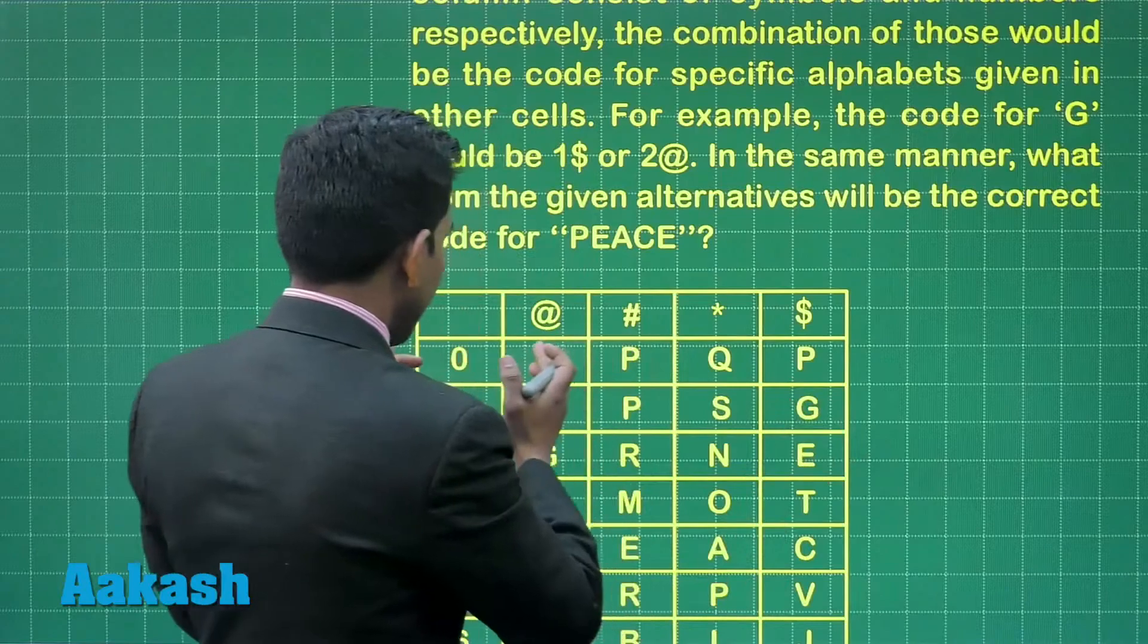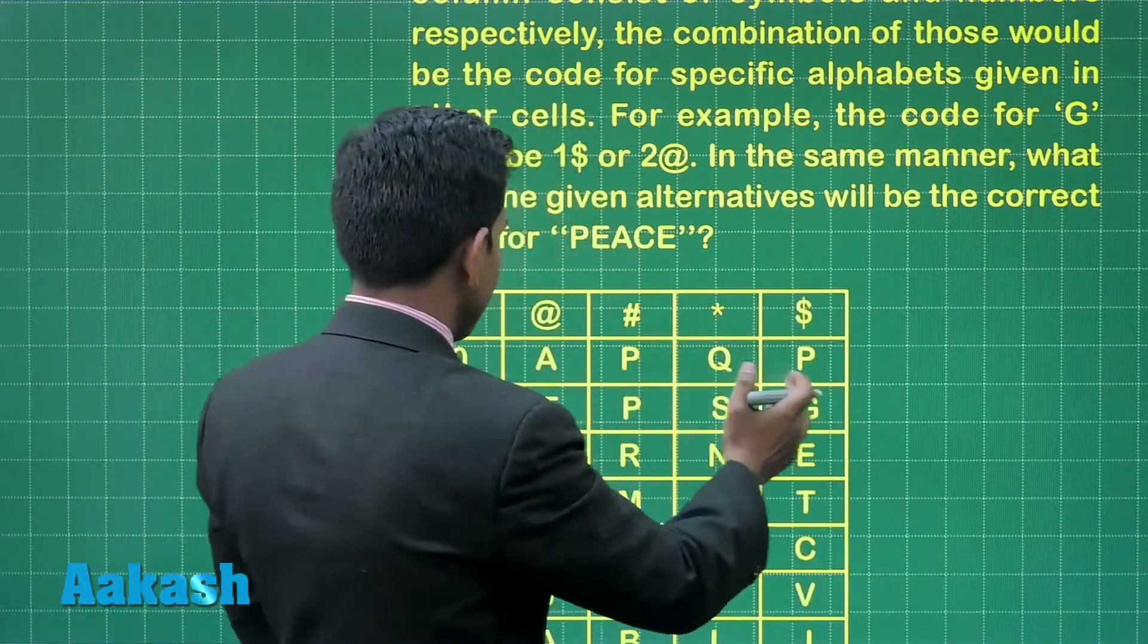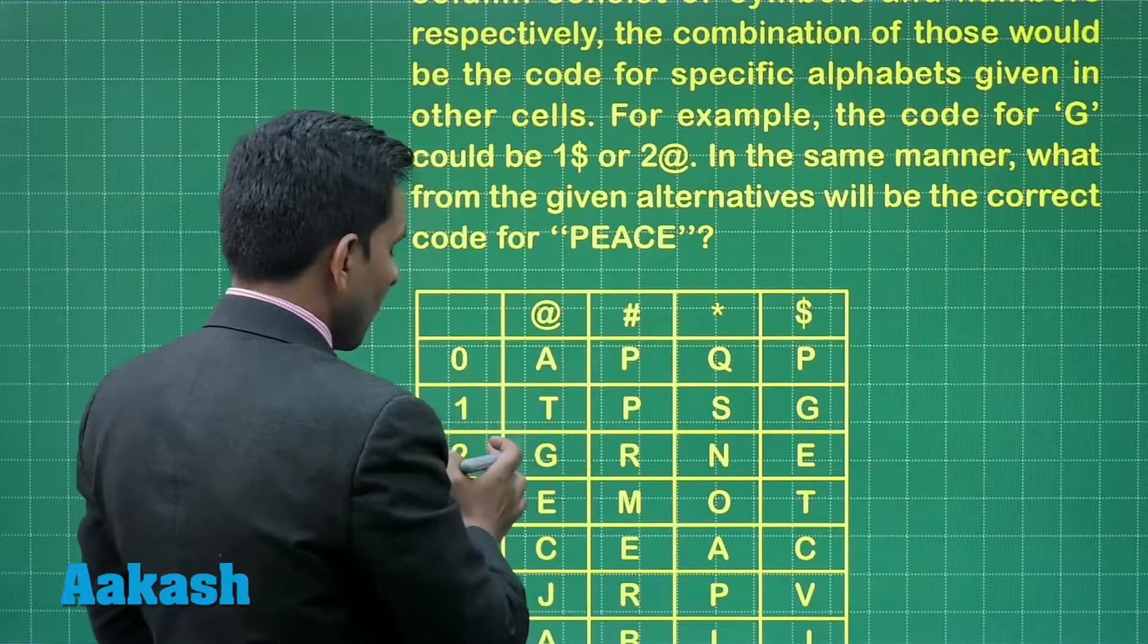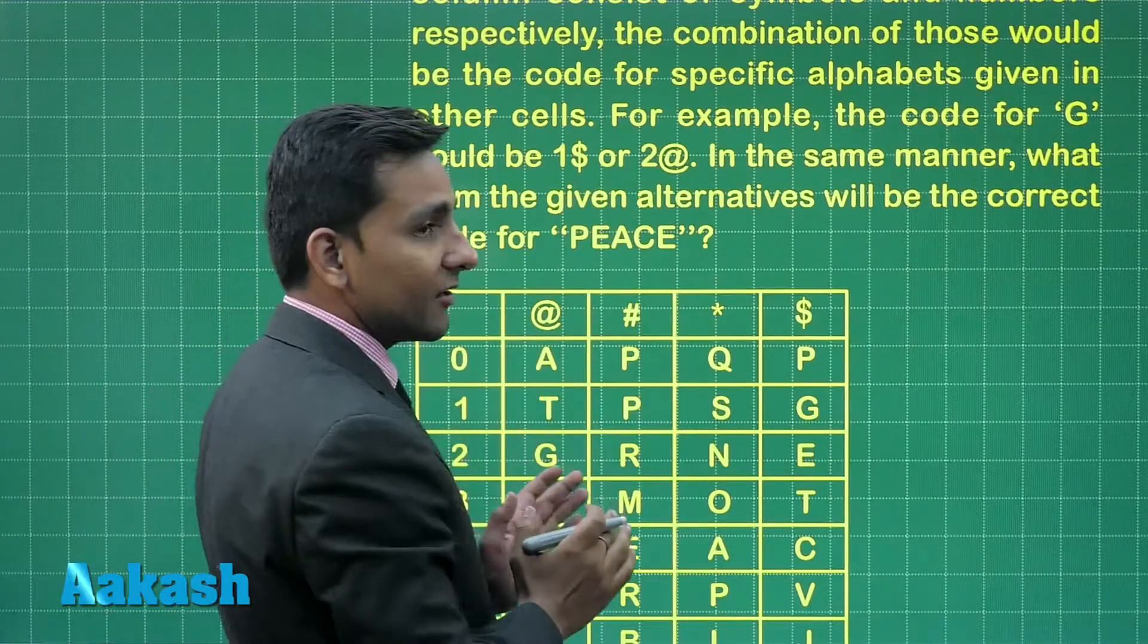G ke liye hamne row ka number or column ka symbol use kiya, that means 1 and dollar. G yahan bhi lahi karra hai. So hamne again row ka number and column ka symbol use kiya hai to add the rate. So this is the pattern of coding.